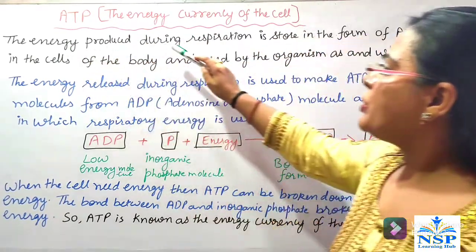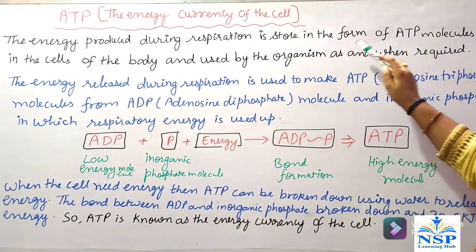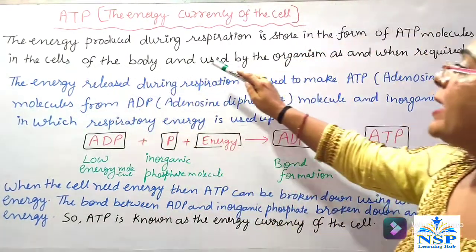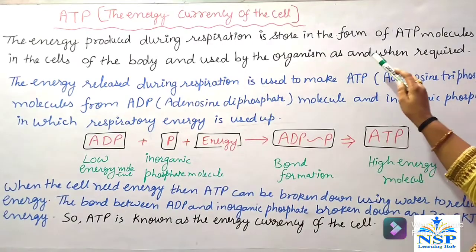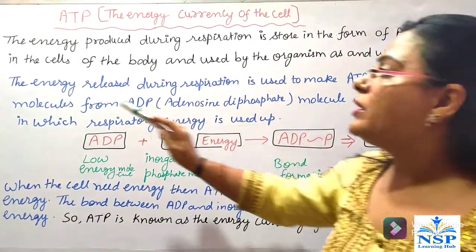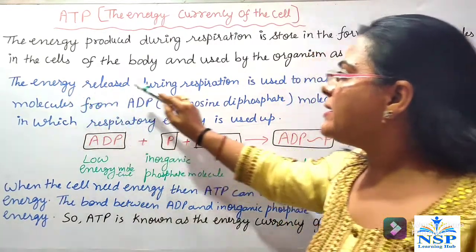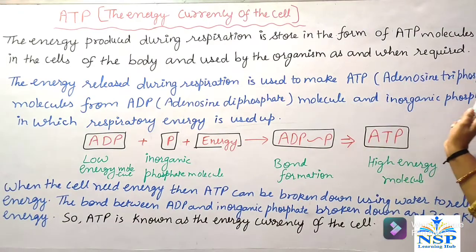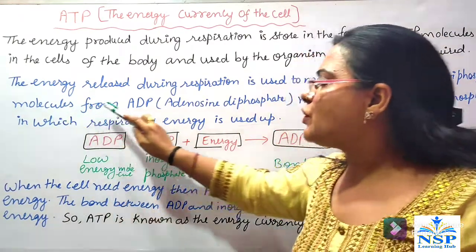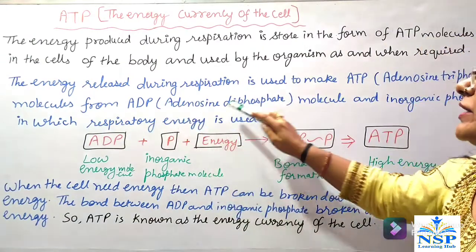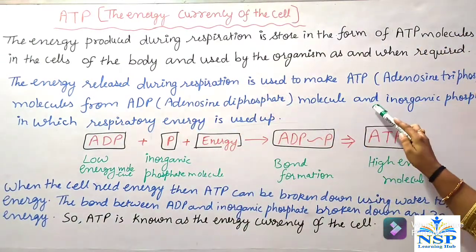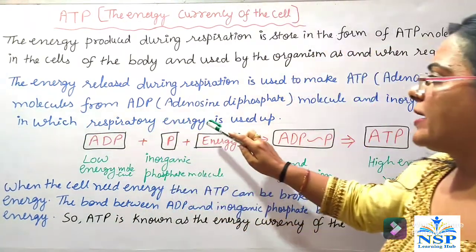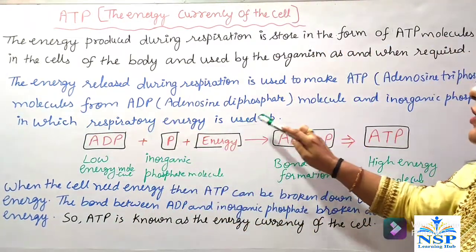The energy produced during respiration is stored in the form of ATP molecules in the cells of the body and used by organisms as and when required. The energy released during respiration is used to make ATP, adenosine triphosphate, molecules from ADP, adenosine diphosphate, and inorganic phosphate.